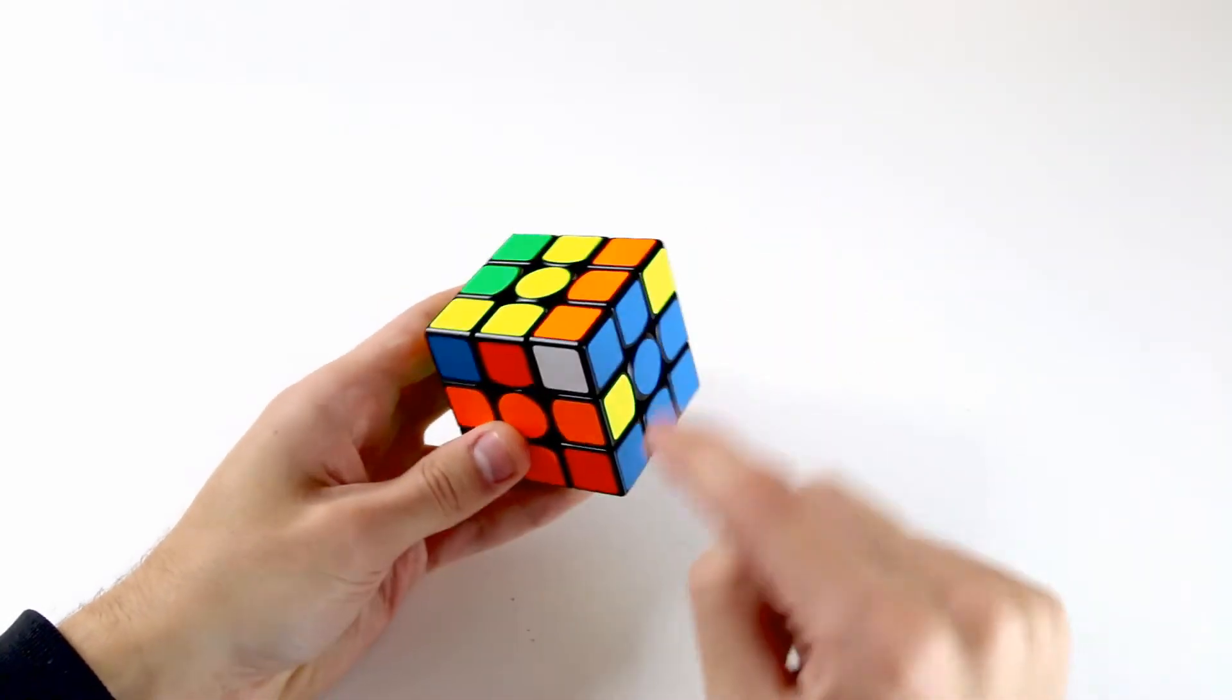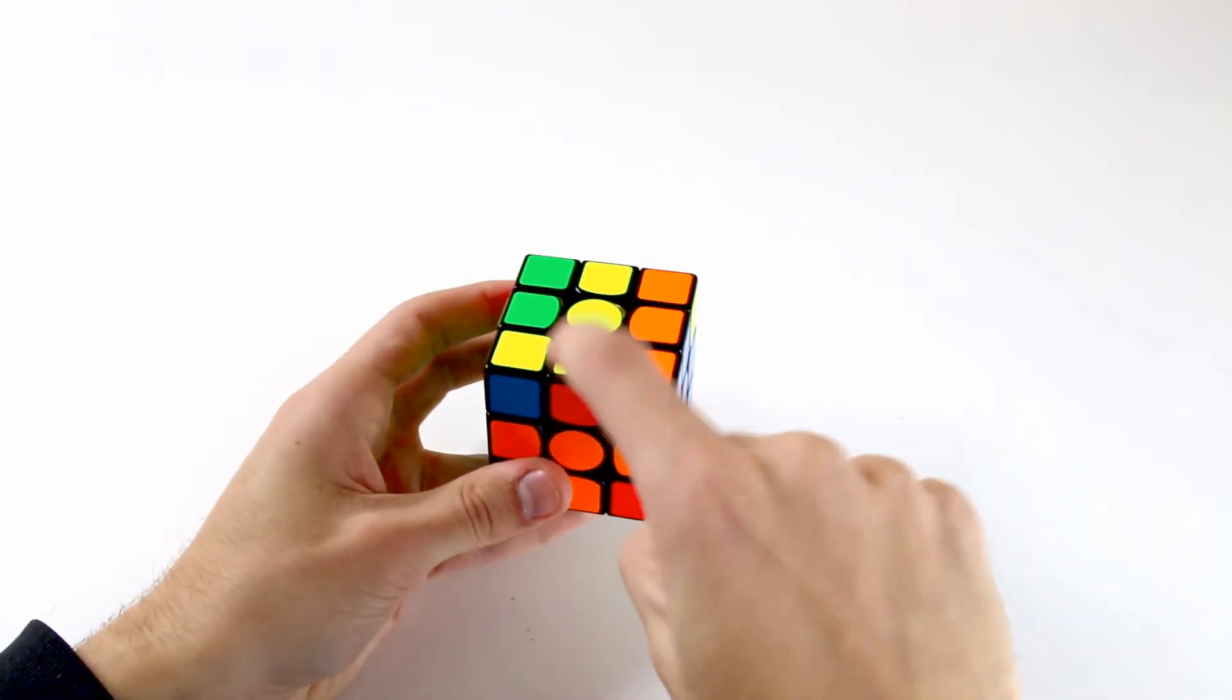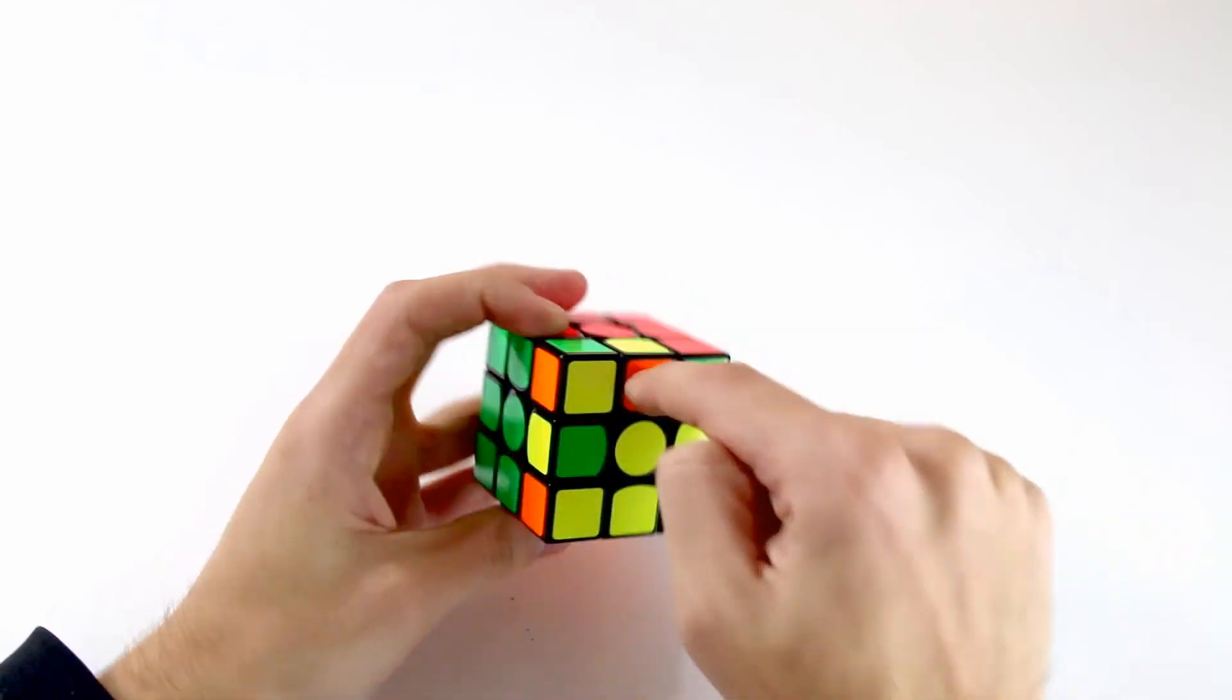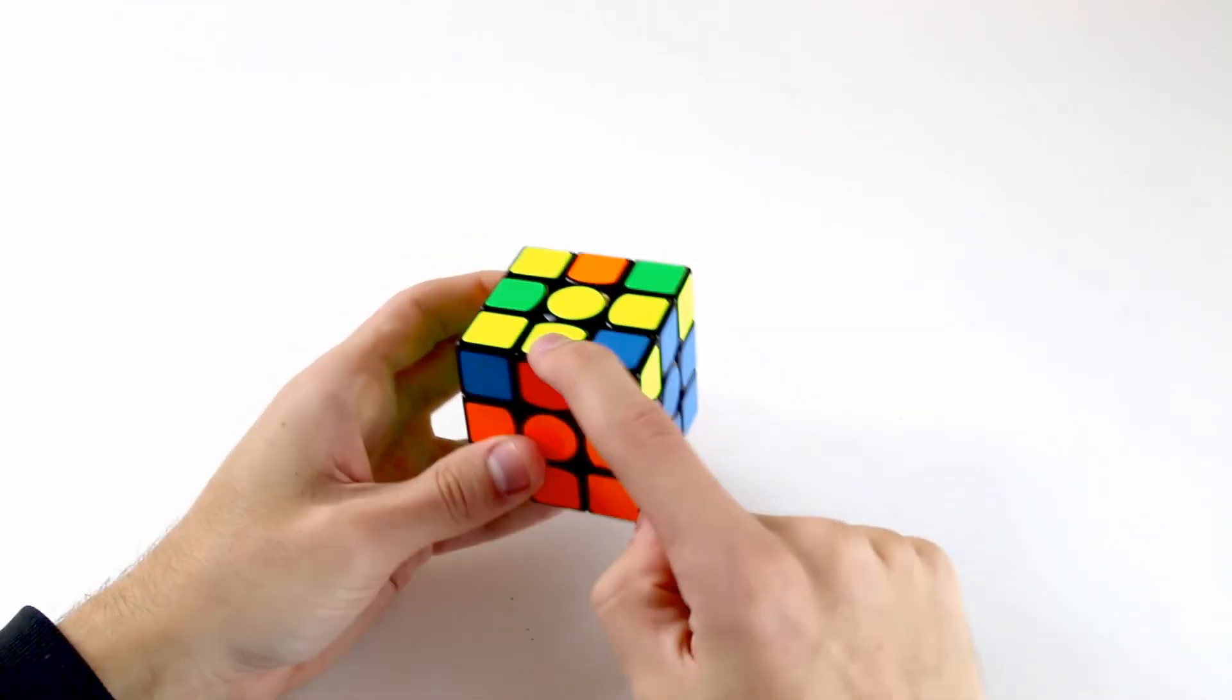So for example here if we have this edge misoriented but this edge is oriented, if we just do a U, R, U', R', they stay the same so that one remains misoriented and that one remains oriented.